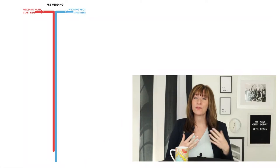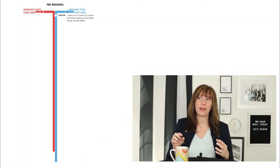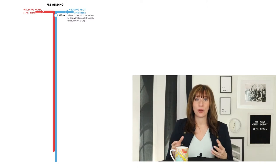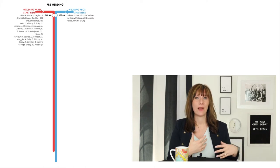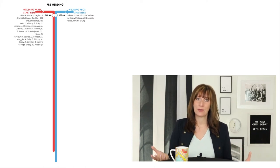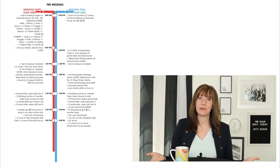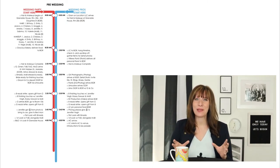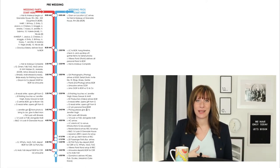In the pre-wedding section we usually start the day with hair and makeup. On the professional side you'll see a subway stop for hair and makeup vendors for when they are supposed to arrive and where they're supposed to go. On the client side we list who is going to receive hair and makeup services, as well as where and when they need to be for those. Then we work through getting ready, pictures, and the reception venue setup. The reception venue is typically the more extensive and time-consuming setup, so we include all those details on the pre-wedding side.